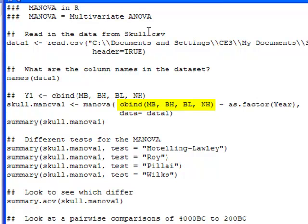So I'm using the cbind to tell it which columns form my response. So here MB, BH, BL, and NH form my response. Then I have a tilde and then I have here as.factor(Year). Now Year is a numeric variable and I want to treat it as if it's an actual factor or a character variable. So what I'm doing is I'm saying as.factor(Year). That way it knows to turn it into a character instead of using it as a number.